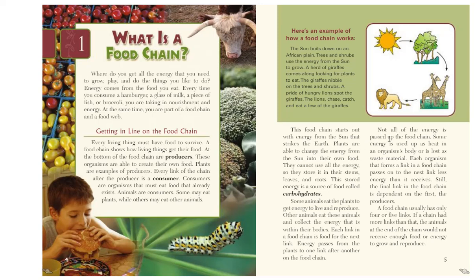Not all of the energy is passed up the food chain. Some energy is used up as heat in the organism's body or is lost as waste material. Each organism that forms a link passes on less energy than it receives. Still, the final link in the food chain is dependent on the first — the producers. A food chain usually has only four or five links, because animals at the end would not receive enough energy to grow and reproduce if there were more.